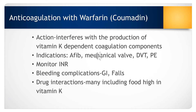Warfarin (Coumadin) is a common medication given to patients with valve replacement. It interferes with the production of vitamin K-dependent coagulation factors. It is also used for patients with atrial fibrillation, deep vein thrombosis, and pulmonary embolism. A patient on warfarin needs frequent INR (international normalized ratio) monitoring. The major complication of warfarin is bleeding — patients may have GI bleeds, internal hemorrhage from falls, subdural hematoma from head injury, or difficulty stopping bleeding from cuts. Patients also need to know about drug interactions and which foods to avoid or consume consistently.